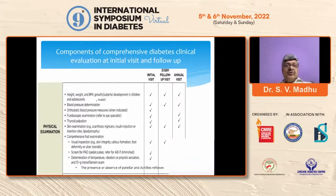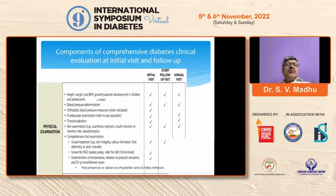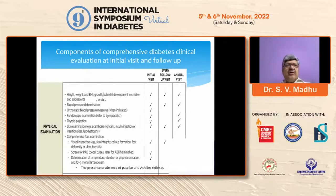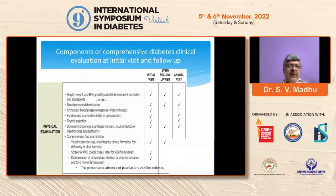Waist cutoffs of 90 cm in males and 80 cm in females are important thresholds for predisposition to insulin resistance and diabetes. Blood pressure determination is very important — not only in the lying-down position but also looking for orthostatic hypotension, as autonomic neuropathy may be present. Fundoscopic examination is a part of clinical evaluation, but at times we need to refer to an eye specialist for a detailed retinal examination. These days fundus cameras allow us to photograph the fundus and even have it interpreted by artificial intelligence, with only selected cases needing confirmation by an ophthalmologist.